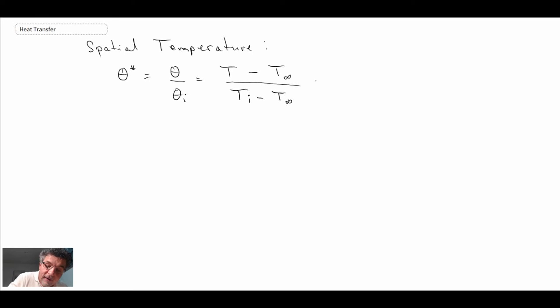And that is going to equal the centerline temperature, so the theta naught star that we just calculated in the previous part, where I showed you the equation. And then this is where you get the fun Bessel functions.